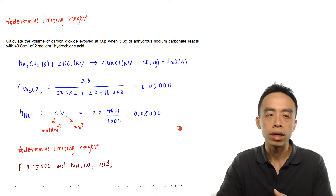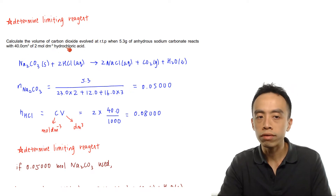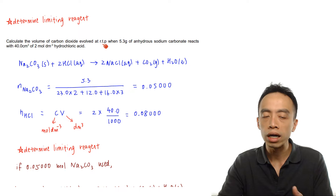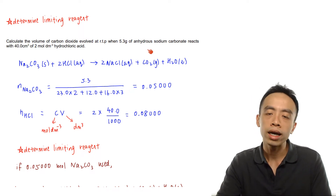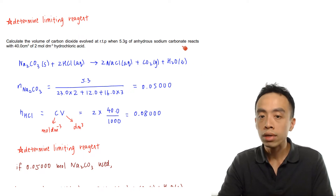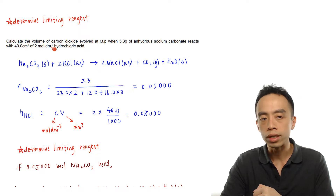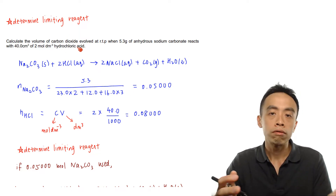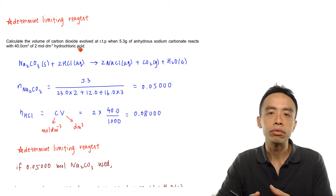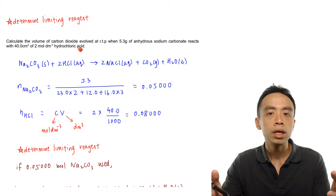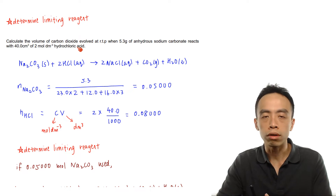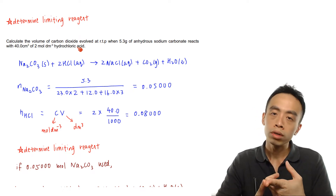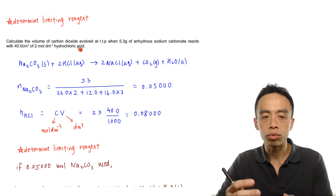Let's take a look at this simple exercise. I want to calculate the volume of carbon dioxide produced at room temperature and pressure (RTP), when 5.3 grams of anhydrous sodium carbonate — anhydrous means no water — reacts with 40.0 cm³ of 2 mol/dm³ hydrochloric acid. The first thing we handle is the reaction between sodium carbonate and HCl, which is a simple acid-carbonate reaction. Acids plus carbonates give salt, carbon dioxide gas, and water.